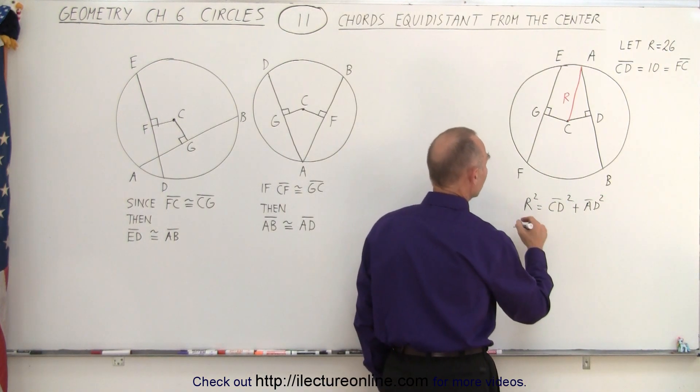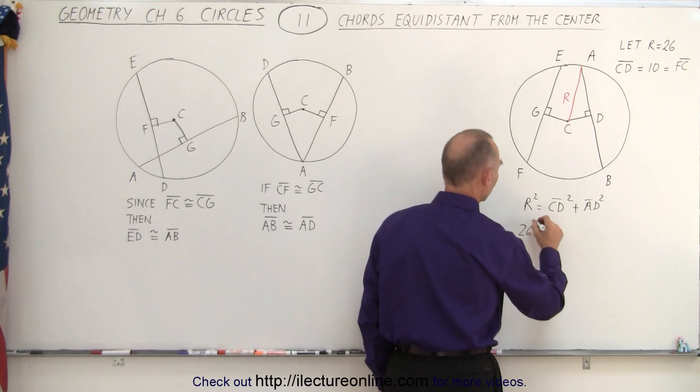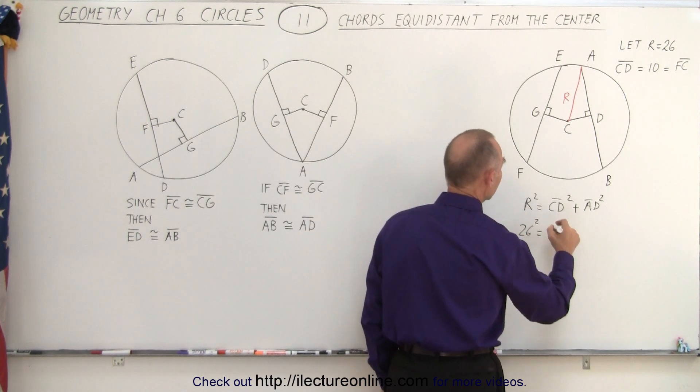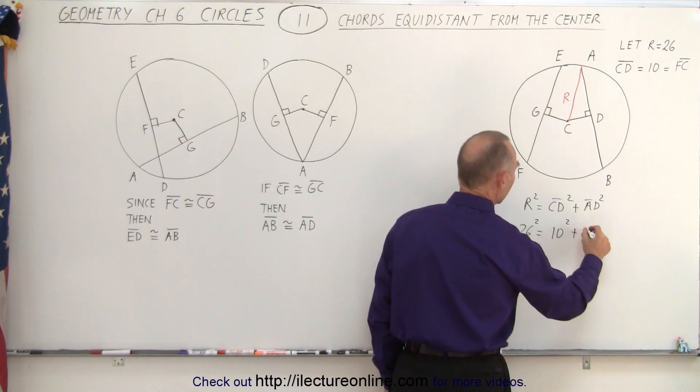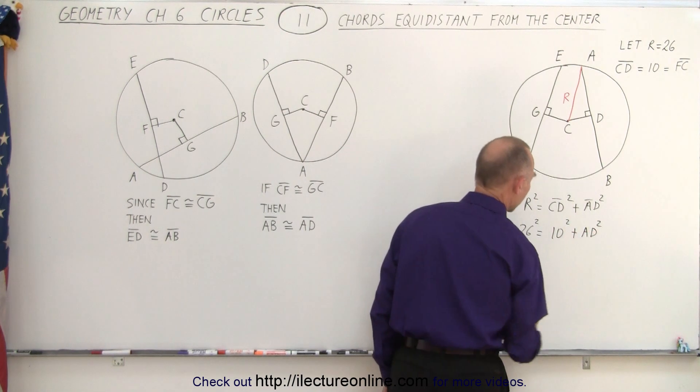Plug in the numbers that we know. So this would be 26 squared is equal to from C to D that is 10 squared plus A to D squared.